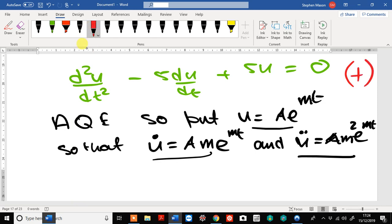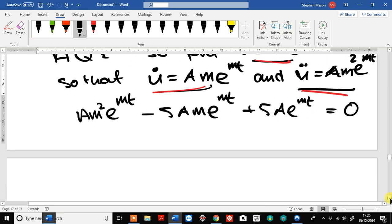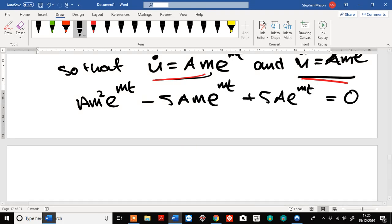We get a m squared e to the mt minus 5am e to the mt plus 5a e to the mt equal to 0. That simplifies, after cancelling the a's and the exponentials, to m squared minus 5m plus 5 equals 0.